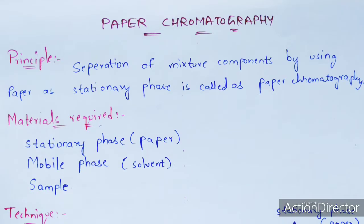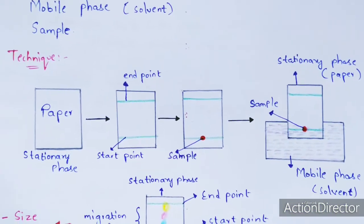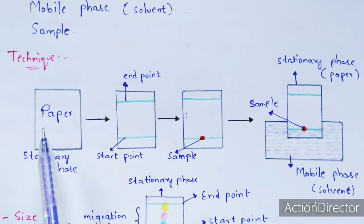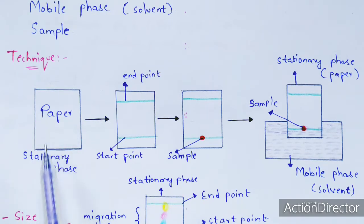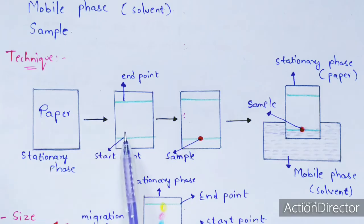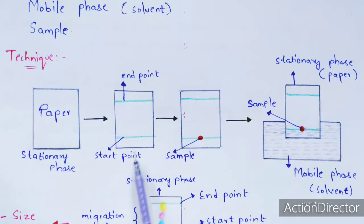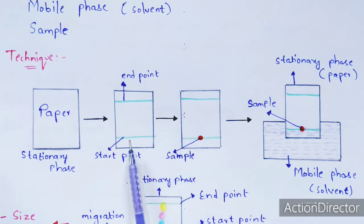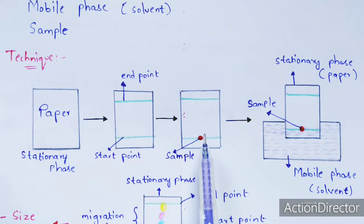Now let us see the technique involved in paper chromatography. First, you take a filter paper — specifically Whatman No. 1 filter paper — which acts as the stationary phase. This paper is marked with a start point and an end point. The sample is then placed on the start point line, indicated as a red dot.